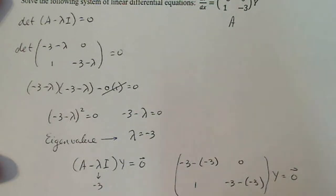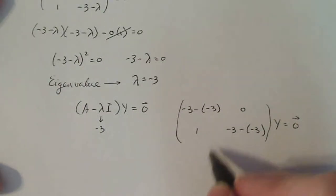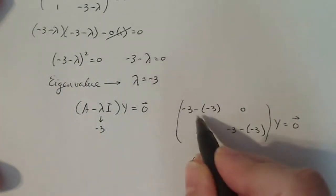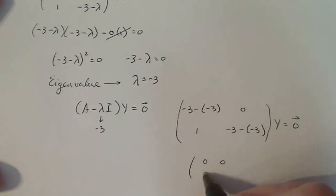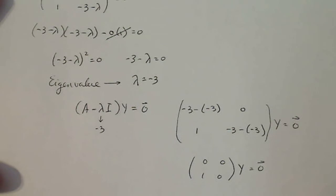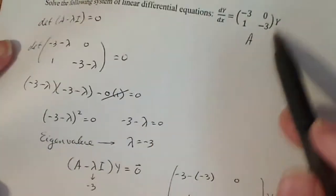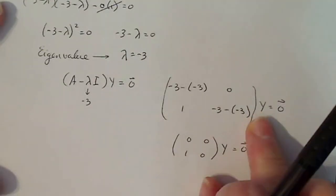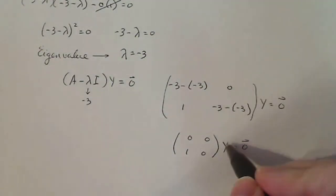Now this is where it gets a little freaky for students, is that this whole matrix here is almost all zeros. So you have zero, zero, one, zero, times y equals the zero vector. Now the vector y, in this case, my vector is actually v. I'm using y like this y that we have up here, but this is actually my eigenvector.